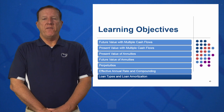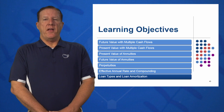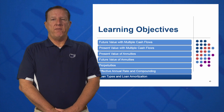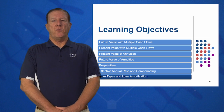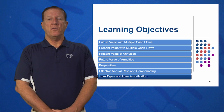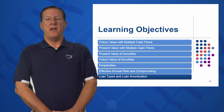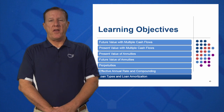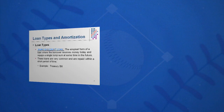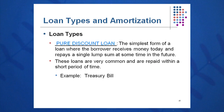In learning objective number seven, the last learning objective of this session, we're going to look at three loan types and loan amortization. The first of three different loan types is a pure discount loan, like a treasury bill.